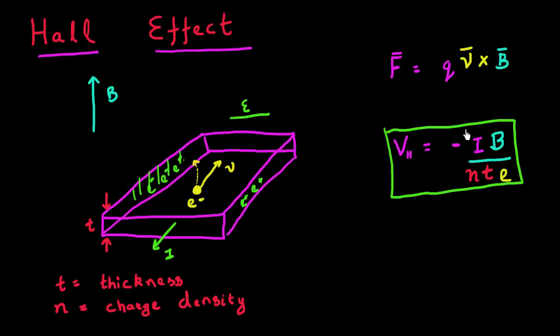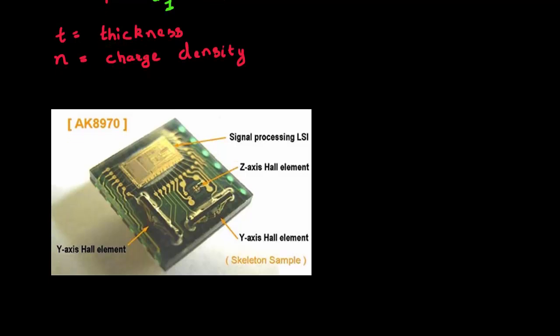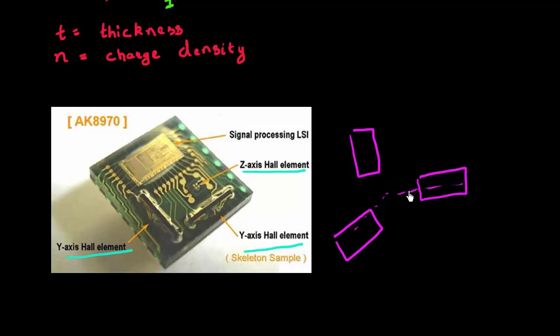That in turn will generate an electric field which negates this Lorentz force. Because of that, you get this Hall voltage, which is what is used to resolve this magnetic field and find its magnitude. Shown here is one of the early sensors which was developed by AKM to measure the magnetic field along the X, Y, and Z axis. It consists of three sensors - two of them are located in the plane and the third one is located perpendicular to them.